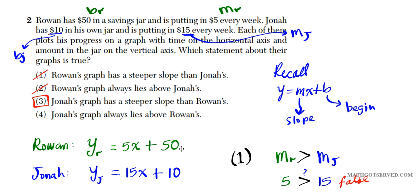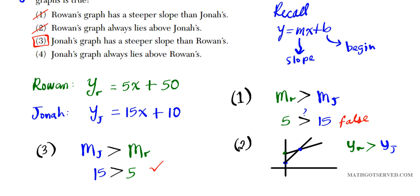Then all you're doing is basically comparing the slopes and the y-intercepts. Whichever one has a bigger positive slope is steeper than the other one with a smaller positive slope. Whichever has a bigger y-intercept is above the other line. You can see that Jonah's situation is much steeper than that of Rowan because it has a bigger slope. And even though Rowan lies above Jonah's line at the beginning because the slope is smaller, Jonah's line will eventually catch up and exceed Rowan's line.